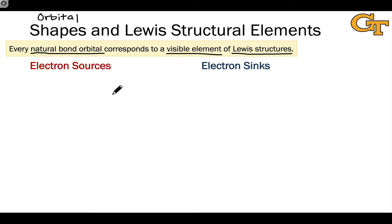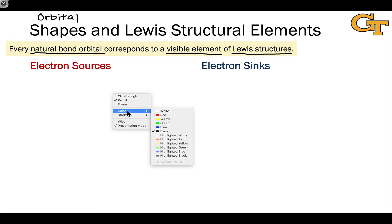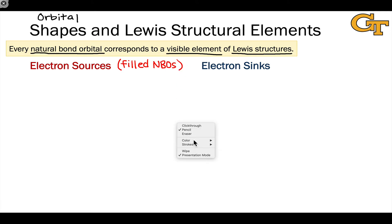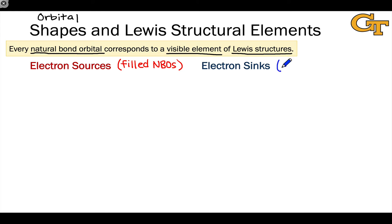What are the NBO orbital shapes? There are six, and we can divide them into electron sources and electron sinks. Electron sources are the filled natural bond orbitals — these contain electrons. If we're talking ground state reactivity, they may be SOMOs in an excited state. The electron sinks are empty NBOs, which are lacking electrons in ground state configurations but may be SOMOs in an excited state.